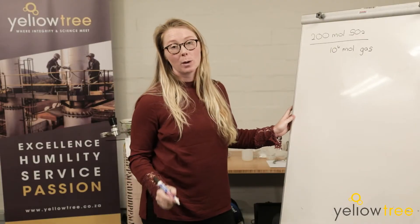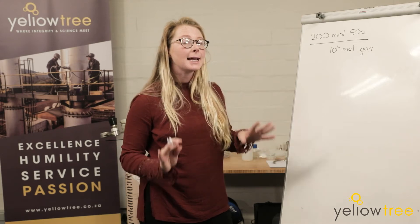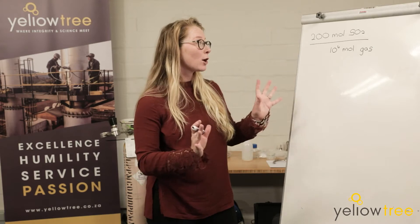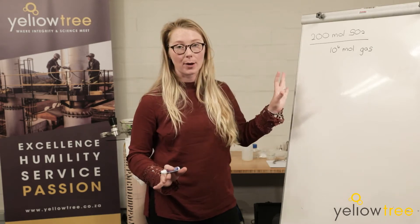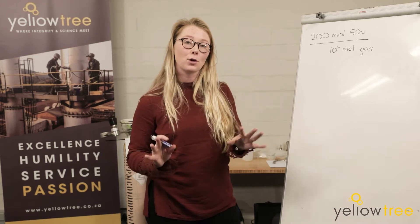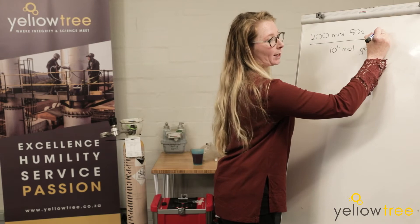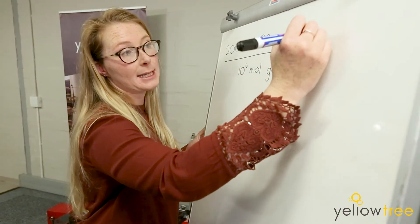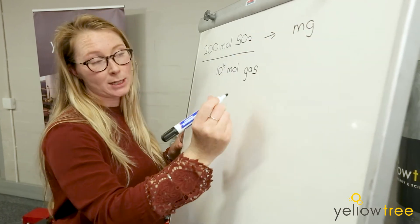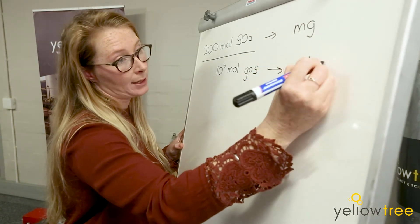What we want to do when we're converting from ppm to milligrams per normal cubic meter is break this equation up into two parts. We're going to look at the top and the bottom separately. We know that we want to get milligrams per normal cubic meter, so that means we're going to want to convert the top into milligrams and convert the bottom into normal cubic meters.